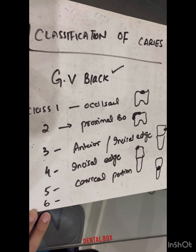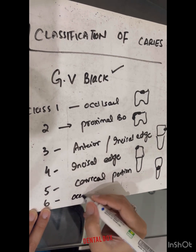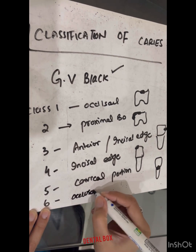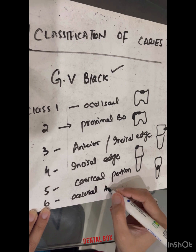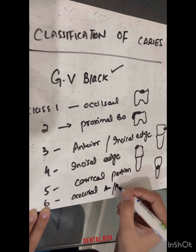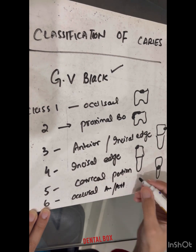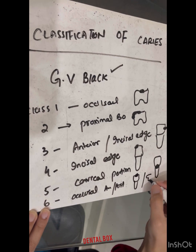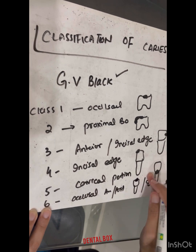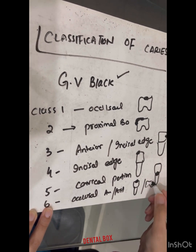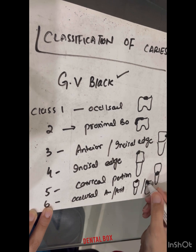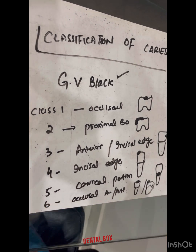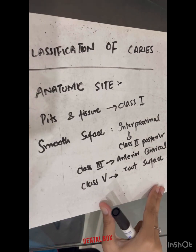Class 6 involves the occlusal edge of both anterior and posterior teeth. So in the anterior teeth this would be class 6, and in the posterior teeth this would also be class 6.